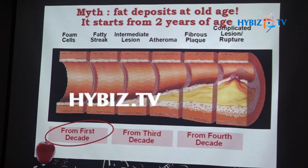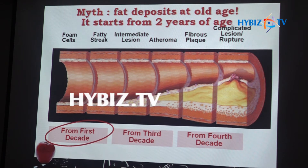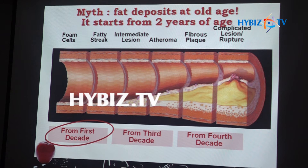A common myth is that heart attacks and blockages in heart blood vessels happen only at an elderly age. But if you look at the data, the deposition of cholesterol within the blood vessel wall starts as early as 2 years of life. This means our lifestyle — and our children's lifestyle — lays the foundation for development of these blockages. The development of blockages increases as age increases, but modification of lifestyle is very important. It is better to encourage children to have an active lifestyle.